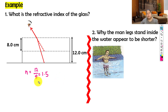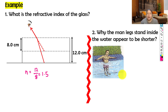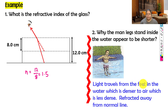Question two: why do a man's legs standing in water appear to be shorter? The legs appear shorter because the image is higher than the actual position. The light travels from the feet in the water - water is denser - then goes into air which is less dense, so the light is refracted away from the normal. The man sees an image, so the legs appear shorter - the actual legs are deeper than the image.